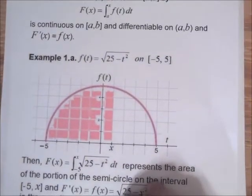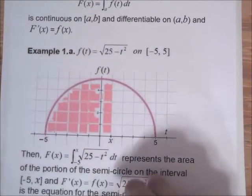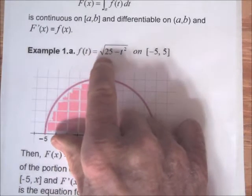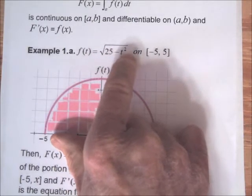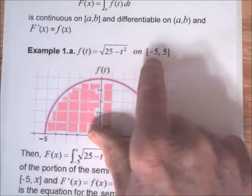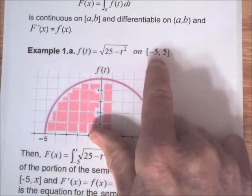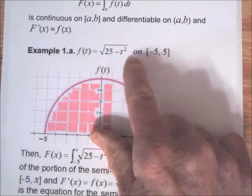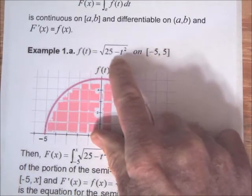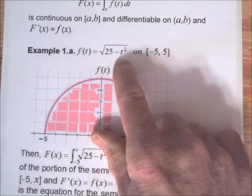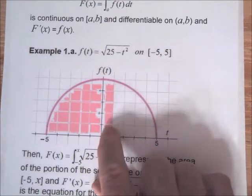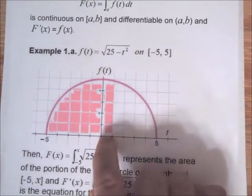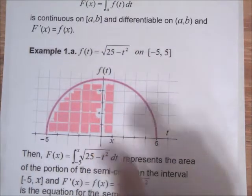An example: little f is the square root of 25 minus t squared on the interval from minus 5 to 5. You may recognize this formula from pre-calculus. This is the semi-circle of radius 5 centered at the origin.